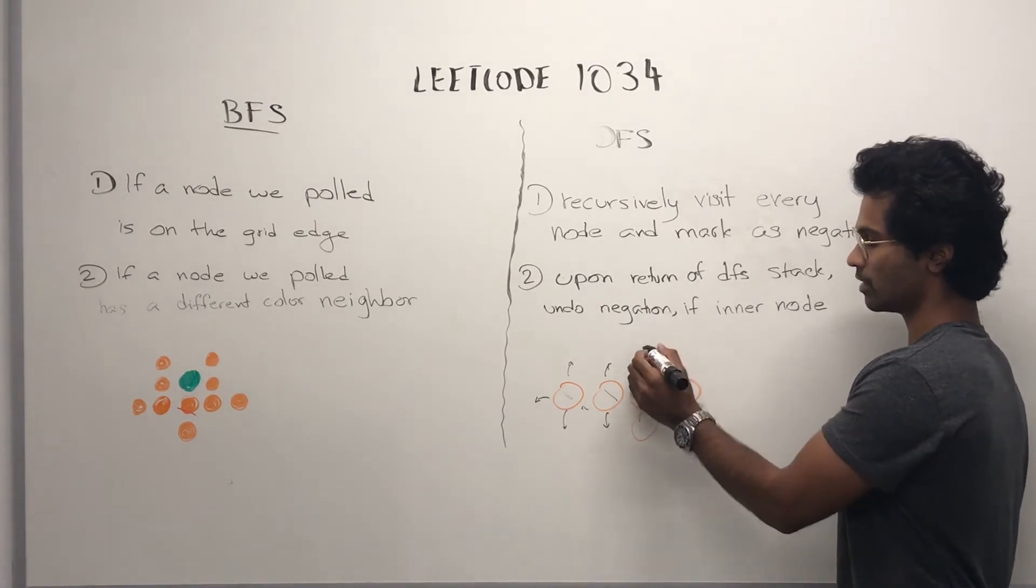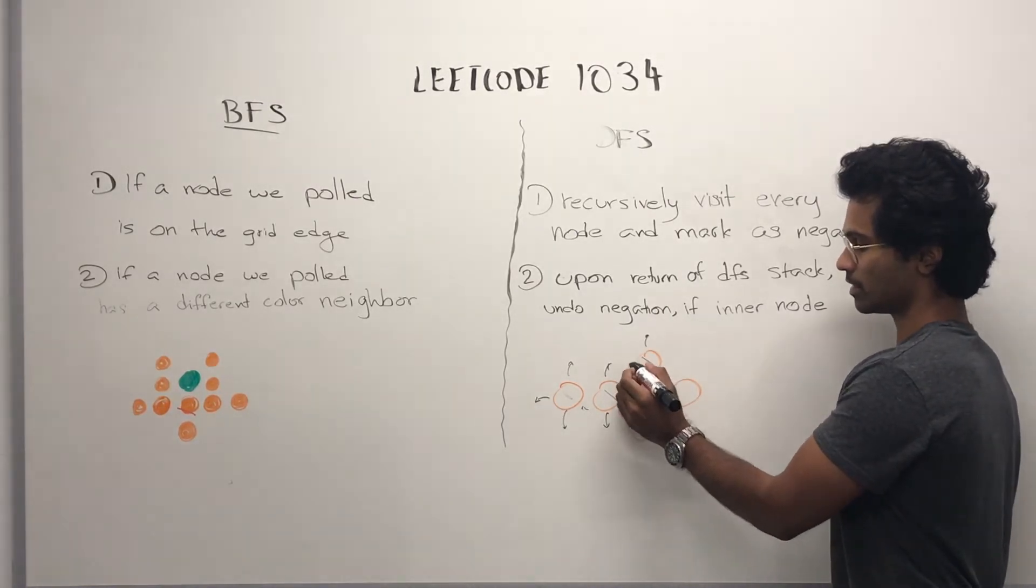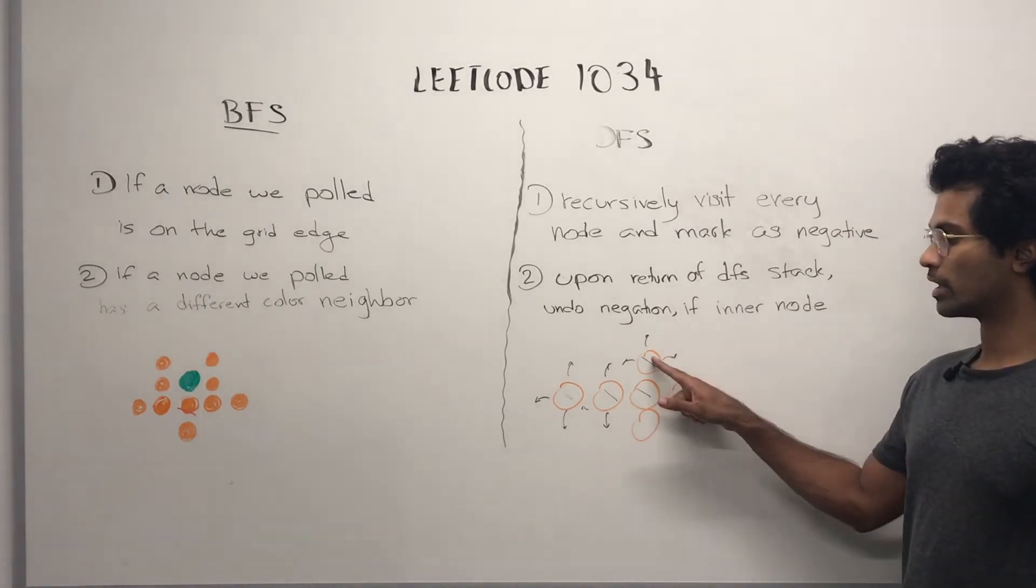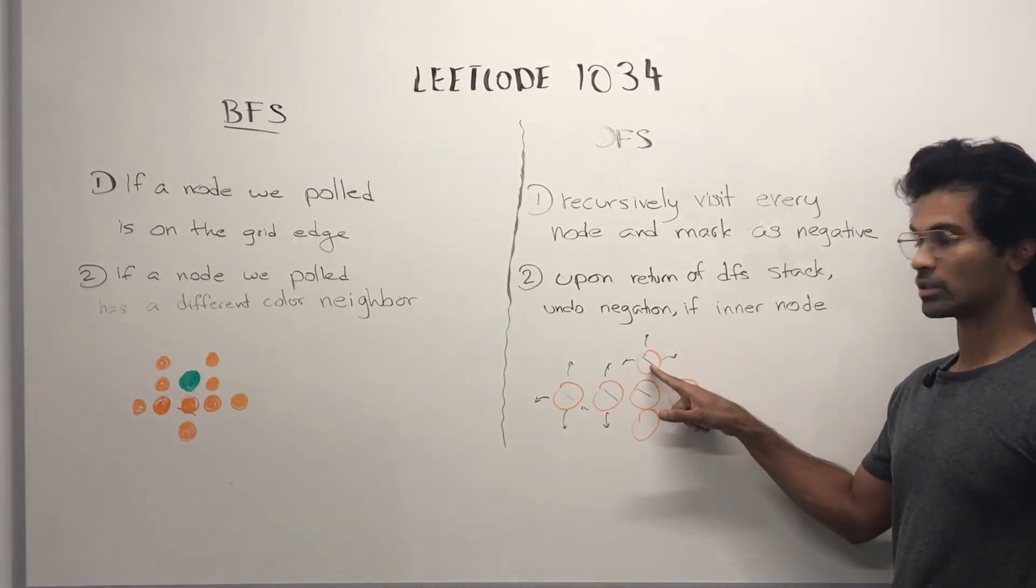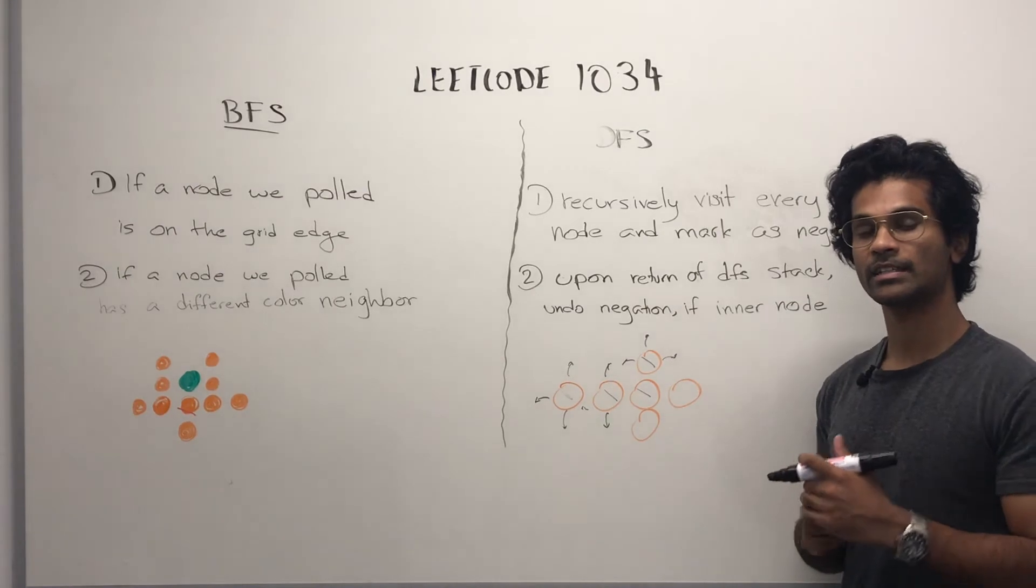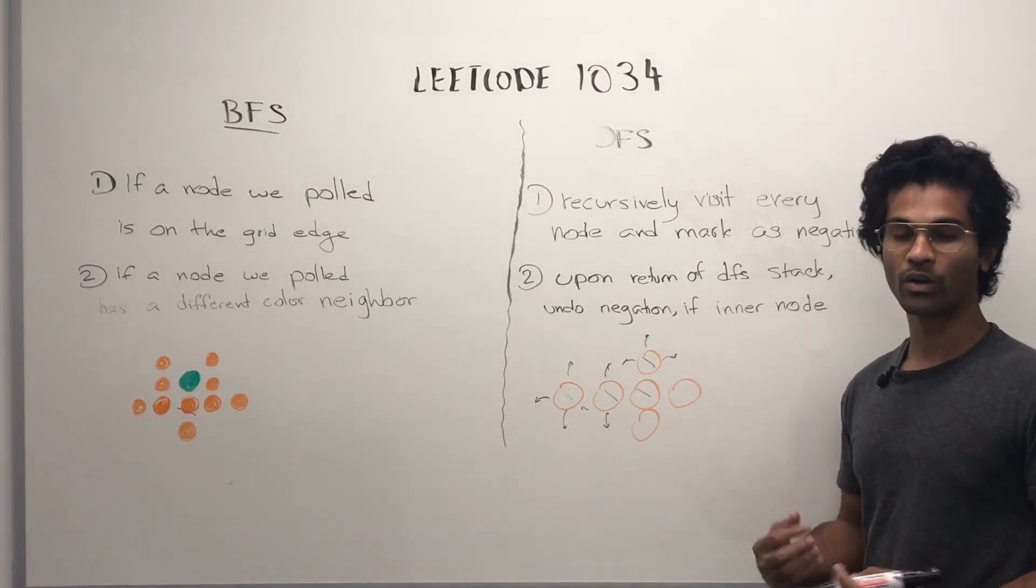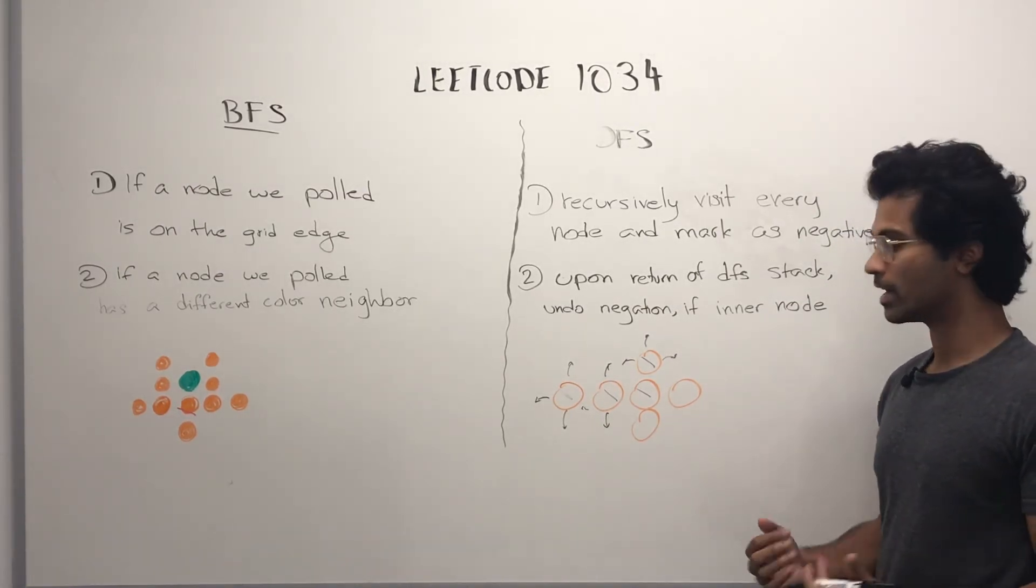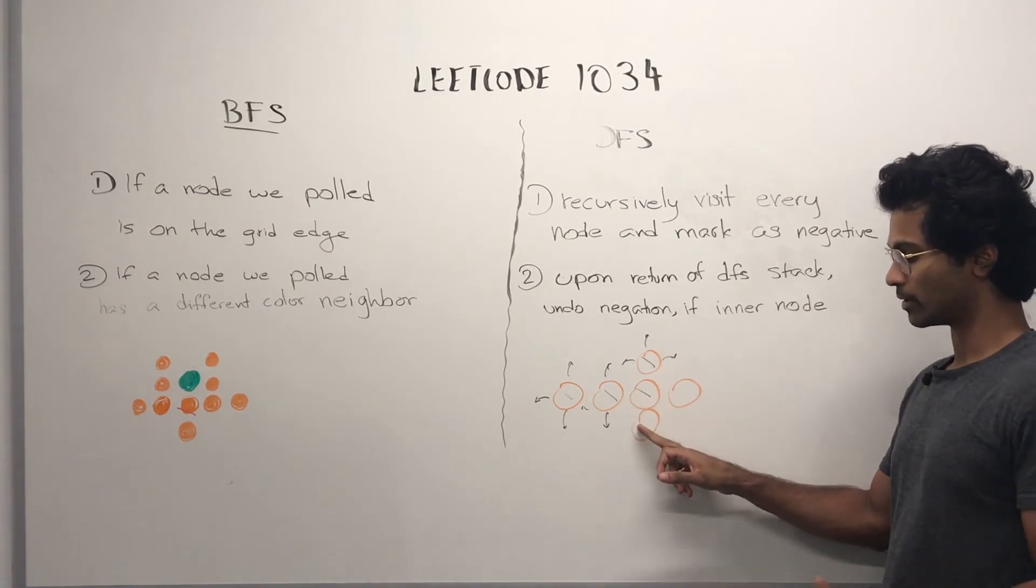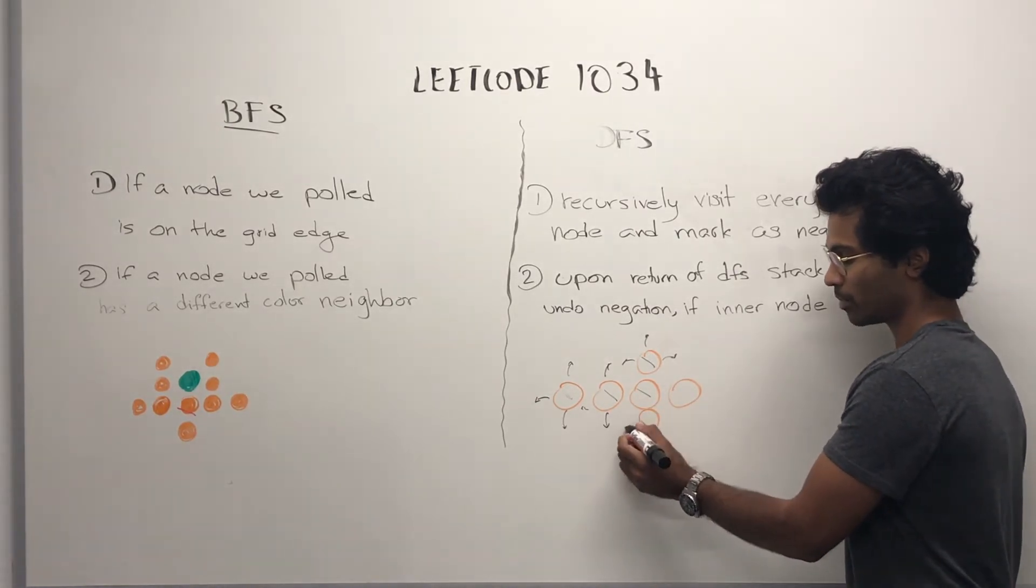then up, down, visited, left, right. And upon returning this node, we see that it's not an inner node, so we don't undo our negation. Then the recursive stack goes back here, now we go down, we color it, up, down,